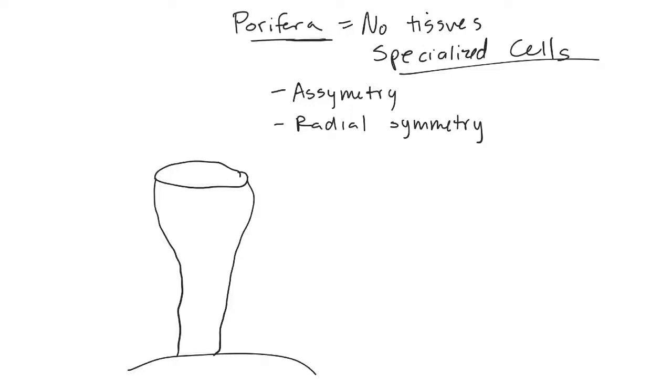The way that they get their nutrients is through current. So they're filter feeders. They have these holes called ostia. And then they have this big hole in the top called an osculum. As the current passes over the top of it, that creates a negative pressure, and it sucks water into the ostia. As water goes through it, it filters out organisms and other things that it can eat.